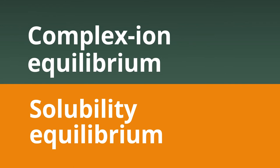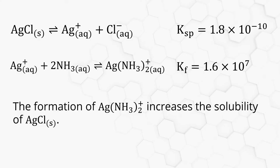The complex ion equilibrium and the solubility equilibrium can be combined to determine the solubility of an ionic compound. For example, the solubility equilibrium of silver chloride: AgCl is in equilibrium with silver ion and chloride ion, and the Ksp is very low — 1.8 times 10 to the minus 10. So if we have a solution with silver ion and we add chloride ion, the reaction quotient Q will quickly exceed Ksp and the equilibrium will shift to the left, meaning silver chloride precipitates very easily.